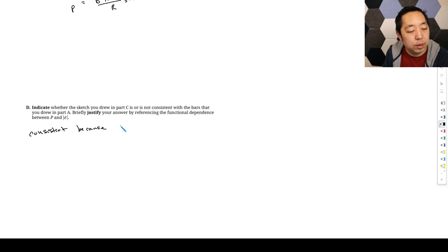So you would just say it's consistent because the power is equal to zero when epsilon is zero at the times zero and one half T. And the power is max when epsilon is max at T equals one quarter T and three quarters of a T.